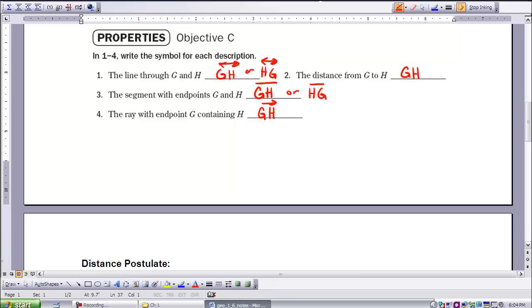And then for number four though, it has to be in this order, ray with endpoint G, so G is listed first, and containing H. So H is a point on the ray, so G first, then H, with the arrow over the top.